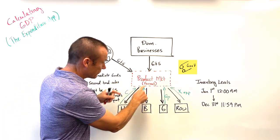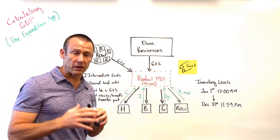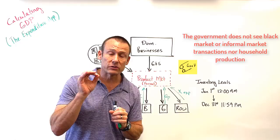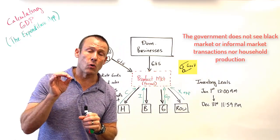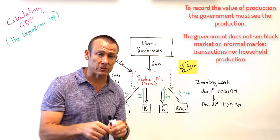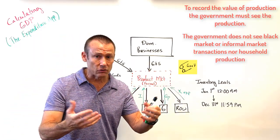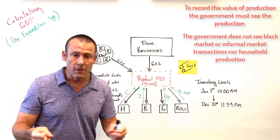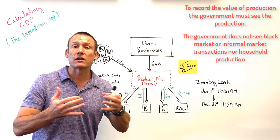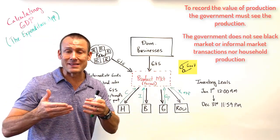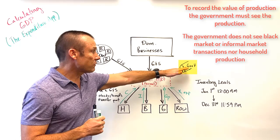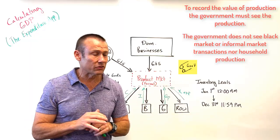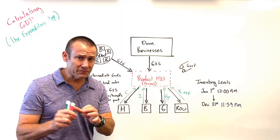There are also transactions that don't get captured in our formal product market — transactions the government doesn't see. These include black market transactions, where the good is illegal; informal market transactions that simply don't get reported, like babysitting; and household production, like growing a garden in your backyard. If the government doesn't see the transaction, it won't be included in the calculation of GDP.